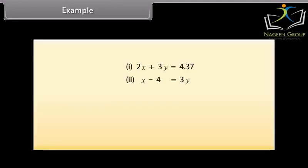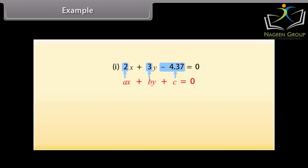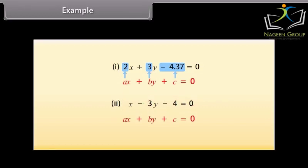Example: let us write these equations in the form AX plus BY plus C equals 0. The first equation can be written as 2X plus 3Y minus 4.37 equals 0, where A equals 2, B equals 3, and C equals minus 4.37. The second equation can be written as X minus 3Y minus 4 equals 0, where A equals 1, B equals minus 3, and C equals minus 4.